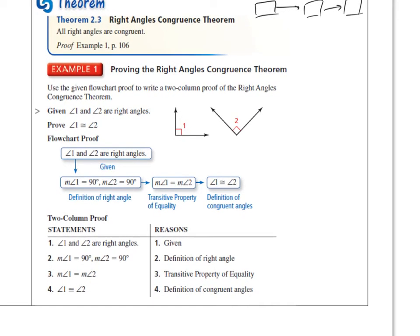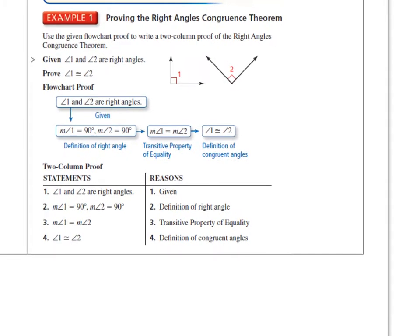Right here, it says: given angle 1 and angle 2 are right angles, prove that angle 1 is congruent to angle 2. Let's first do it with a two-column proof. The first statement is they're given — they're right angles. Well, what do we know if they're right angles? That means the measure of angle 1 is 90 and the measure of angle 2 is 90, because that's by definition.